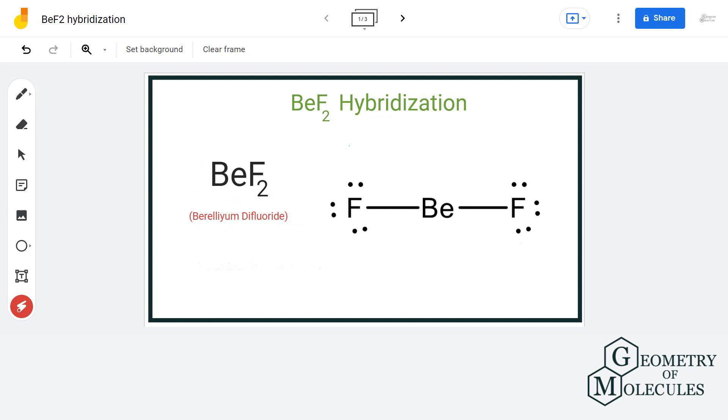Now one of the easiest ways to find hybridization is by counting the number of lone pairs of electrons attached to the central atom and the number of sigma bonds it forms.